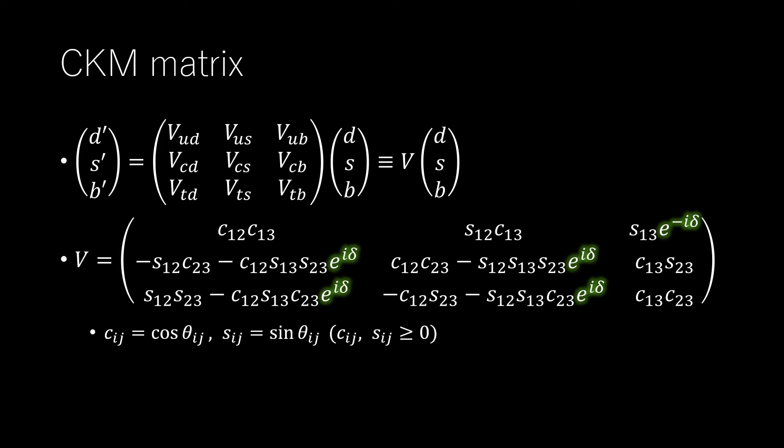Since the time reversal operator acting on a state involves complex conjugation, a non-zero phase delta implies T violation, and hence, if CPT invariance is assumed, CP violation.